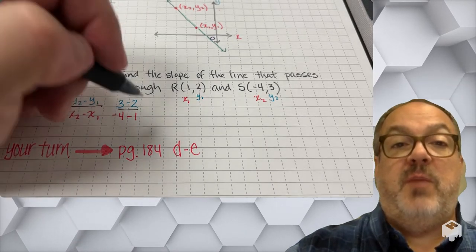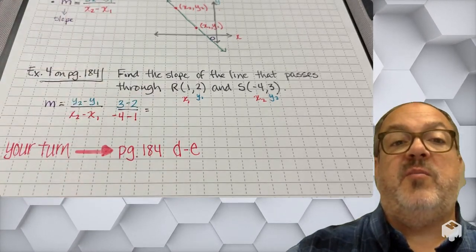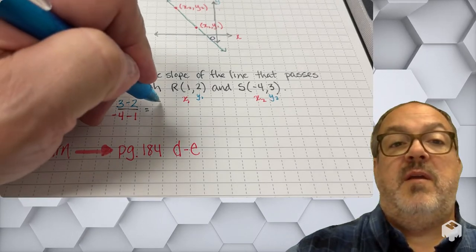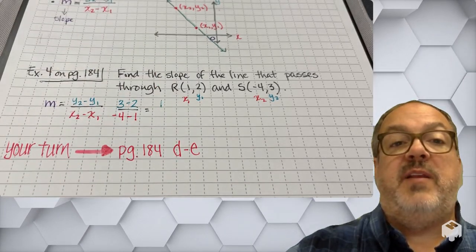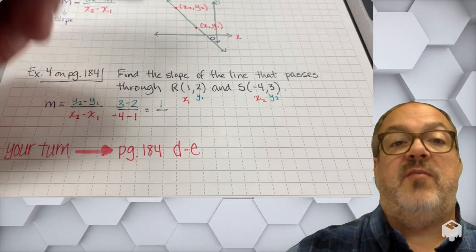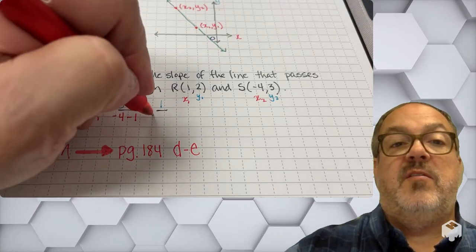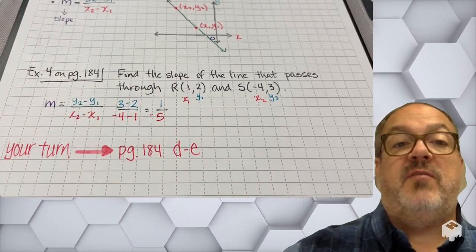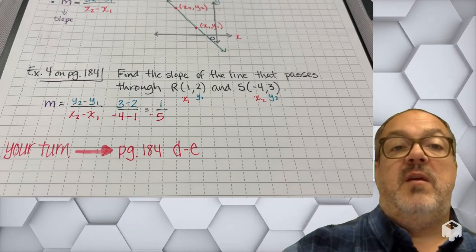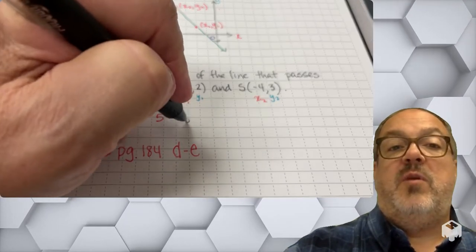So I'm going to have 3 minus 2 over -4 minus 1. All right, so 3 minus 2, that's going to be 1, and -4 minus 1 is going to be -5. So once again, I have a negative slope, and it's going to be -1/5.